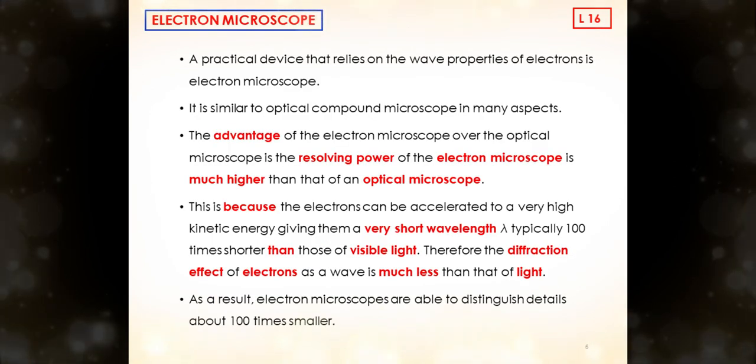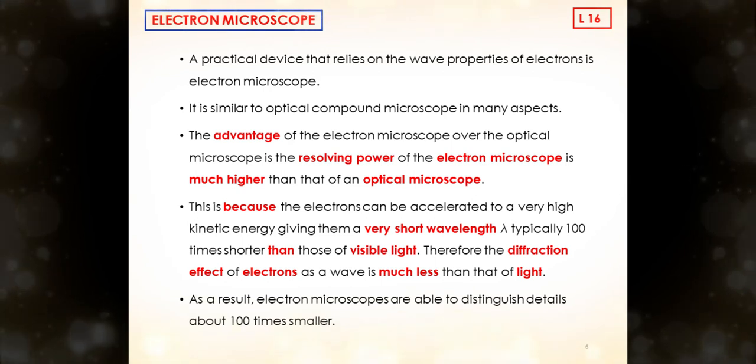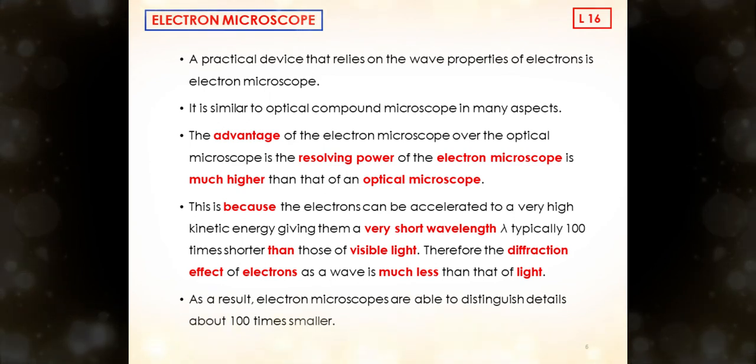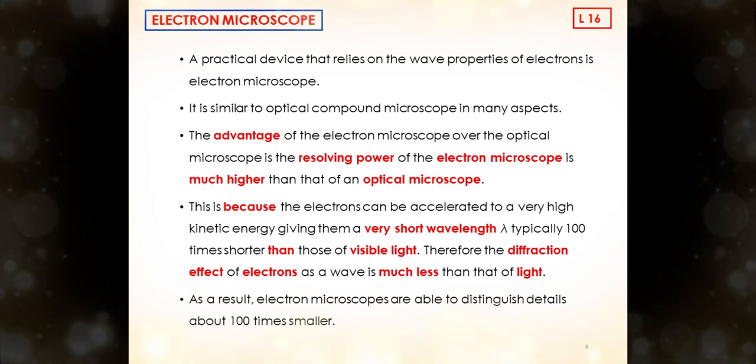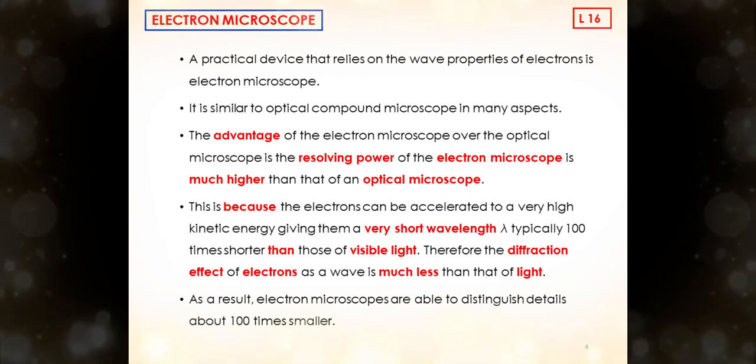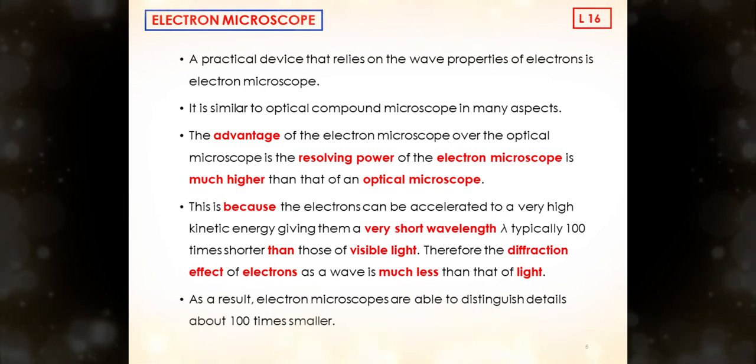Here is about an electron microscope. A practical device that relies on the wave properties of electrons is electron microscope. It is similar to optical compound microscope in many aspects. The advantage of the electron microscope over the optical microscope is the resolving power of the electron microscope is much higher than that of an optical microscope.